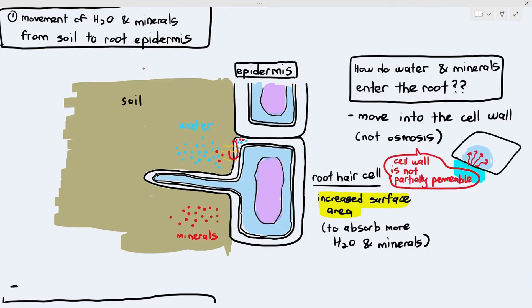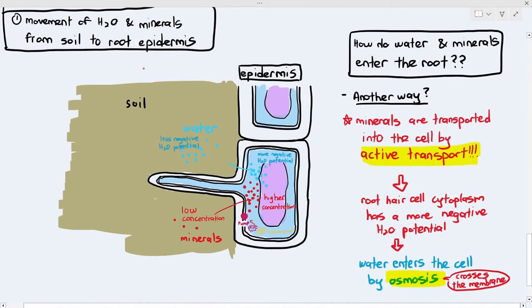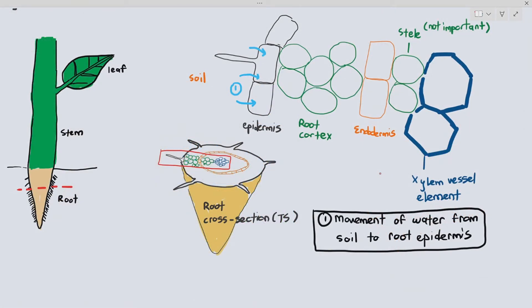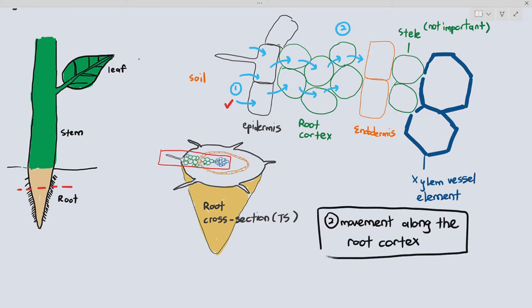So there are two ways in which water and minerals enter the epidermis. First, they move into the cell wall because the cell wall is freely permeable — that is not osmosis. Or, minerals can enter the cytoplasm of the root hair cell via active transport, and water is absorbed into the cytoplasm of the epidermis via osmosis. These are the two methods where minerals and water enter the root epidermis. We are done with the first part — water and minerals have entered the root epidermis.